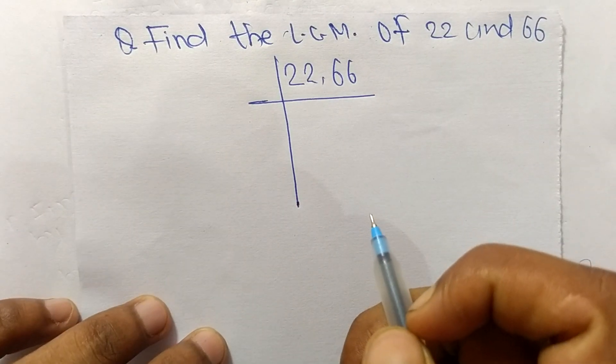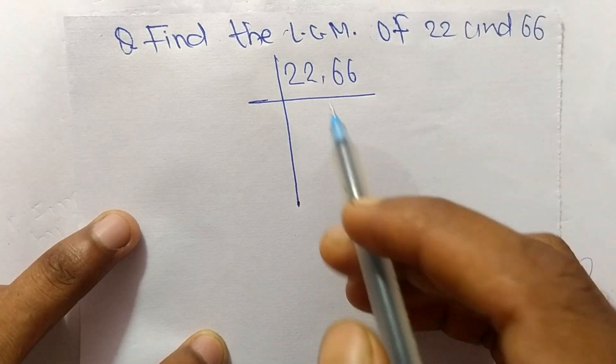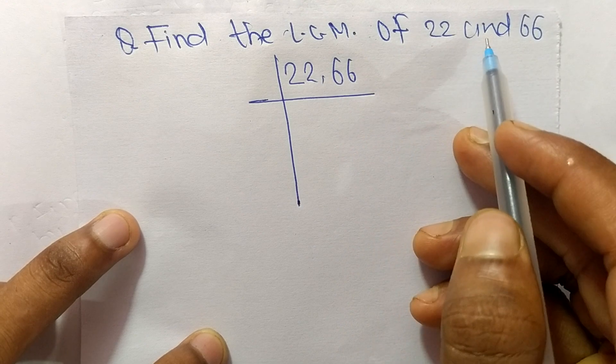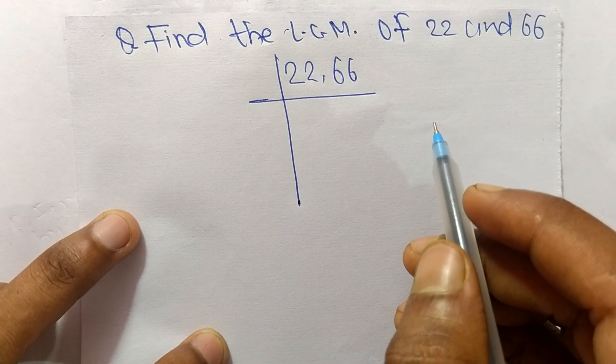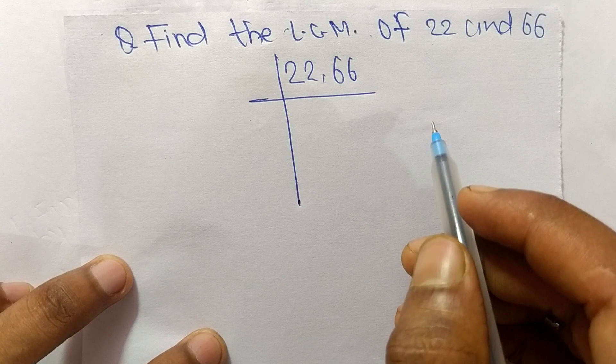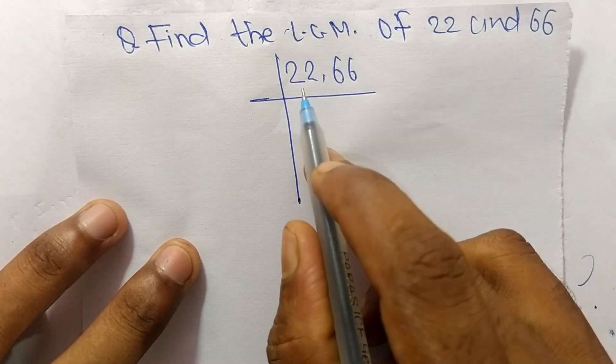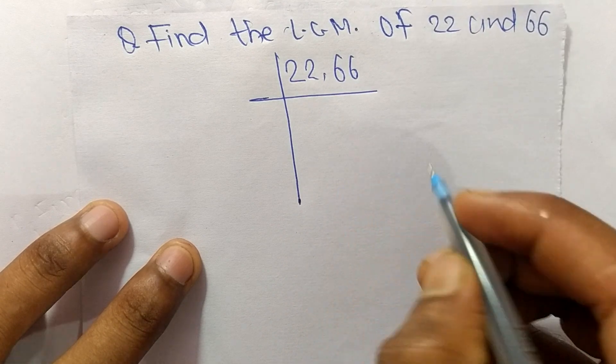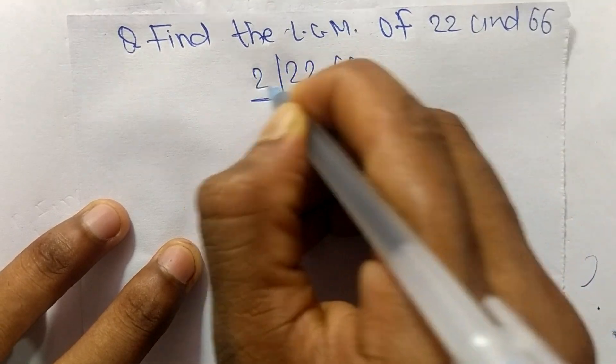Today in this video we'll learn to find the LCM of 22 and 66. To find the LCM, first we choose the lowest number that can exactly divide 22 and 66. The number is 2.